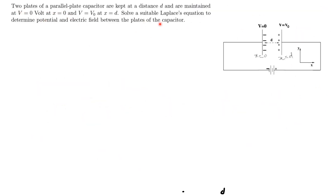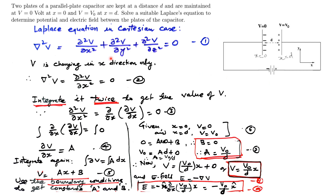Consider two plates of a parallel plate capacitor kept at distance d, with V equal to 0 at x equal to 0 and V equal to V naught at x equal to d. We have to solve the Laplace equation to find the potential V and electric field between the plates. The Laplace equation in Cartesian form is del squared V equal to delta²V/delta x² plus delta²V/delta y² plus delta²V/delta z² equal to zero. Since change occurs only in the x direction, y and z terms are zero, reducing to delta²V/delta x² equal to zero.